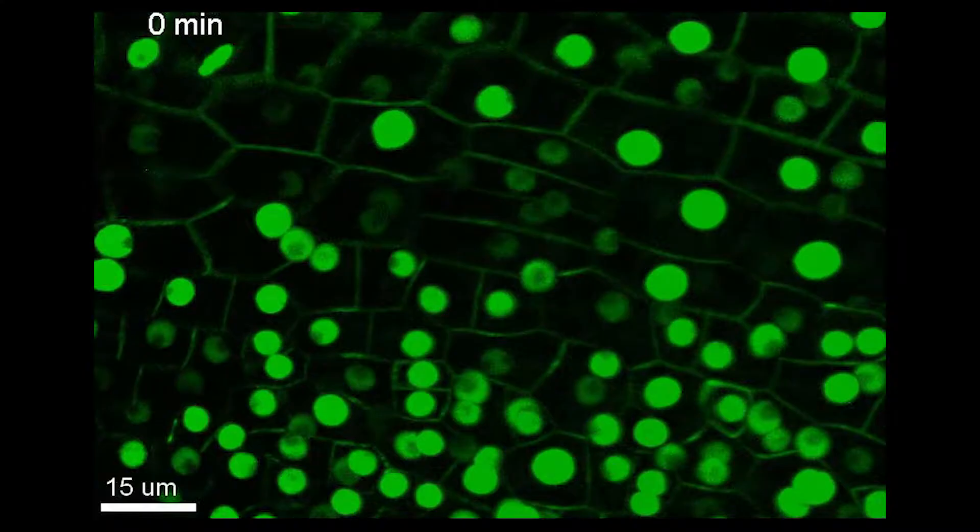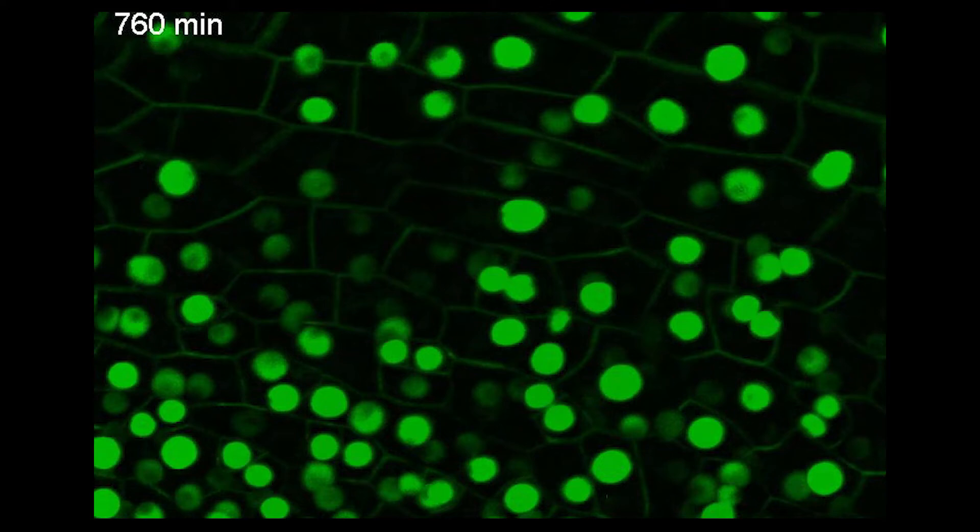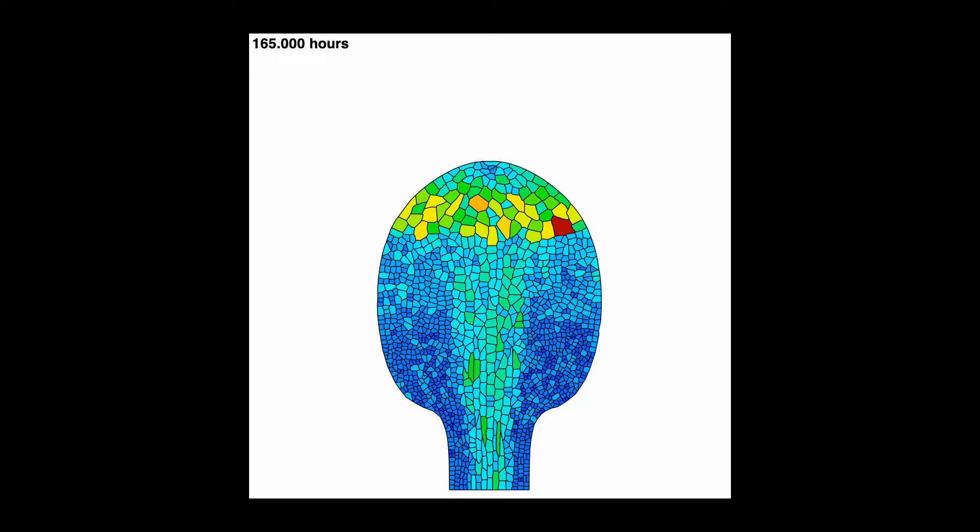In plants, growth and division can happen at the same time. And we've shown how genes control those processes very precisely in time and space to create the amazing shapes we see around us.